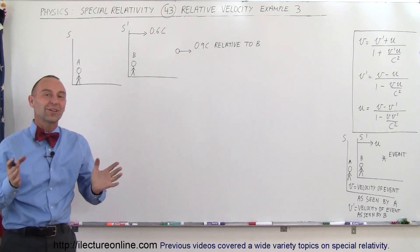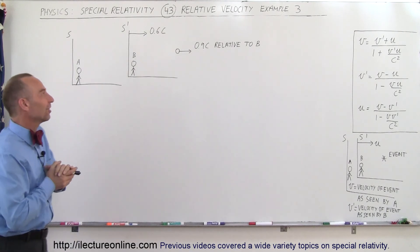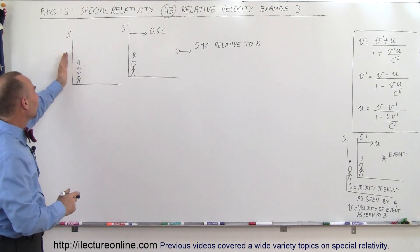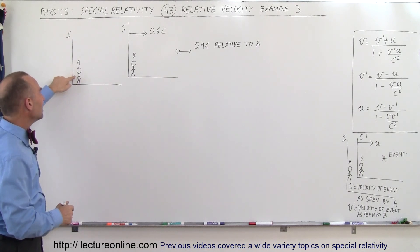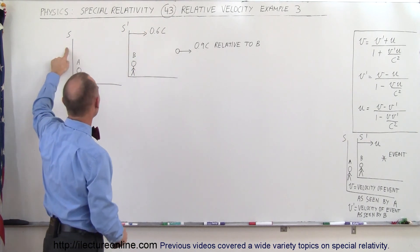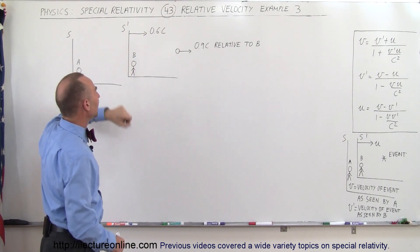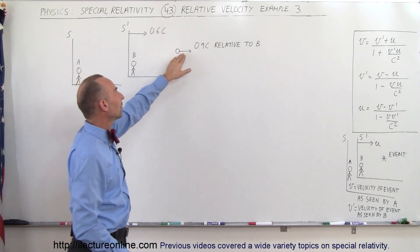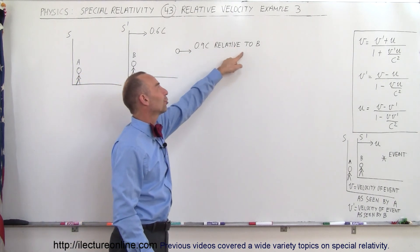Welcome to Electron Align and here's our third example of how to deal with relative velocity. In this case we have a stationary reference frame with observer A, a moving reference frame which is moving at 0.6C relative to the stationary reference frame with observer B, and an event that's moving at 0.9C relative to observer B.